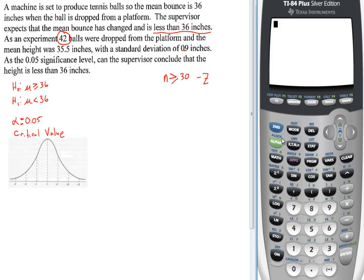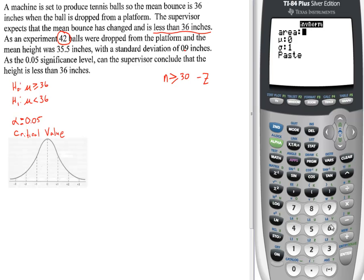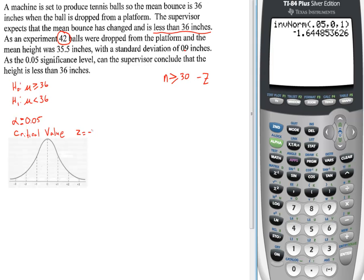So we're going to go to distributions, inverse norm, number 3. And the area we want, well, it's less than. So we're only talking about one tail test here, to the left. So we want an area of 0.05, one tail, because we're only one side. And our mu is 0, standard deviation is 1, because we're looking for our Z value.